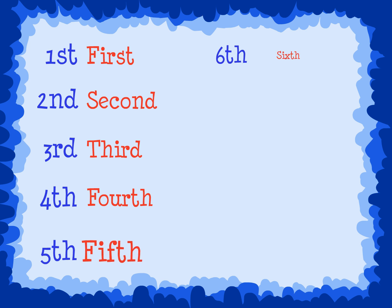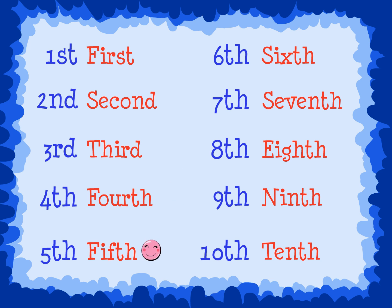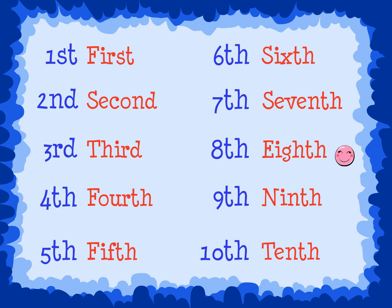Here is a list of ordinal numbers from one through ten. Count with me. First, second, third, fourth, fifth, sixth, seventh, eighth, ninth, and tenth.